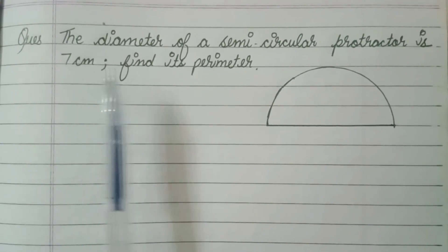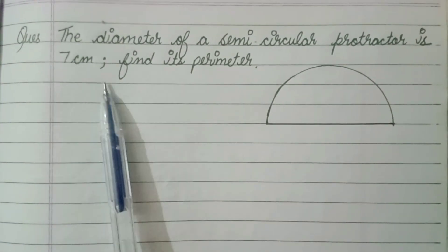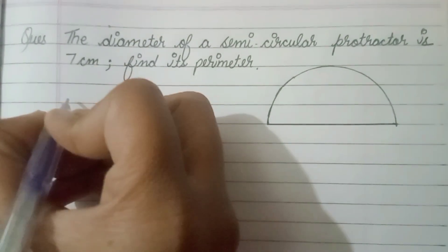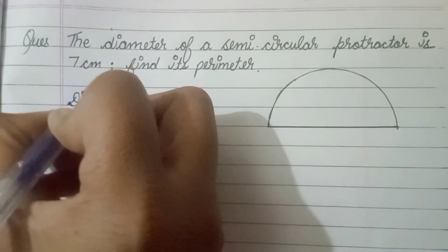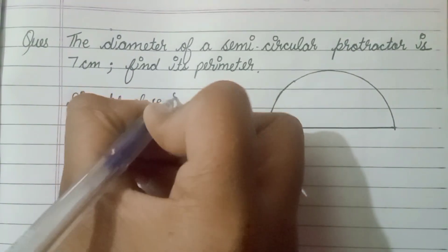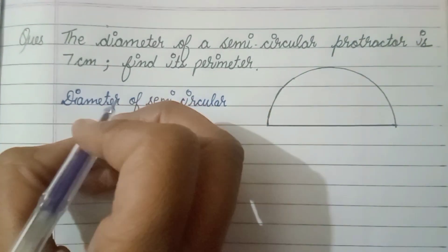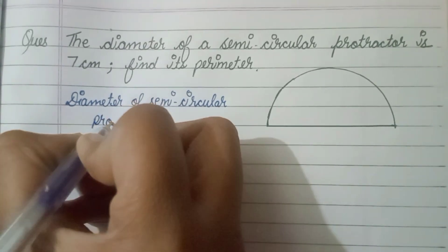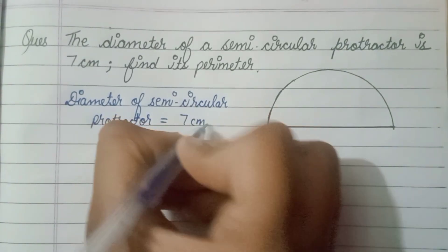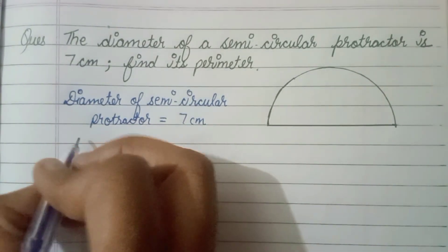Hi friends, welcome back to my channel. Today we will solve this question: the diameter of a semicircular protractor is 7 centimeters, then find its perimeter. So what is given — the diameter of the semicircle protractor is 7 centimeters.